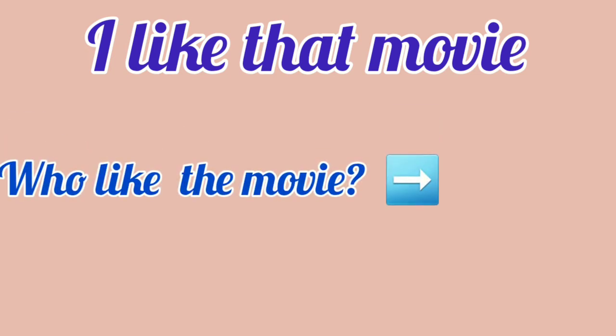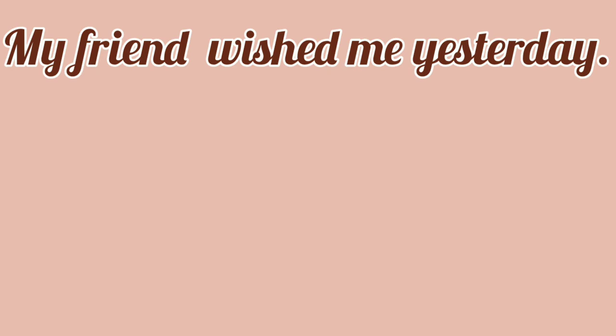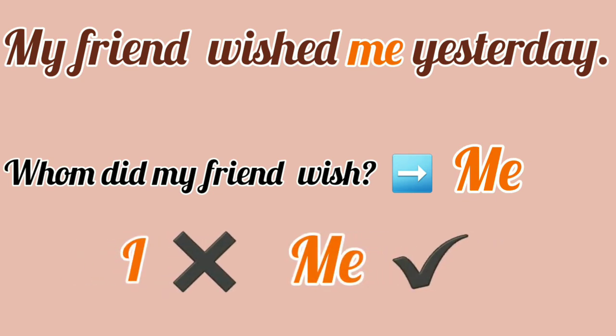Let me give you a sentence: 'I like that movie.' Who likes the movie? I like the movie. Here's another sentence: 'My friend wished me yesterday.' Whom did my friend wish? Me. In the second sentence, you cannot use the pronoun from the first sentence — you cannot say 'My friend wished I.' Here, 'I' as a pronoun is used in the place of object, and hence it becomes 'me'.